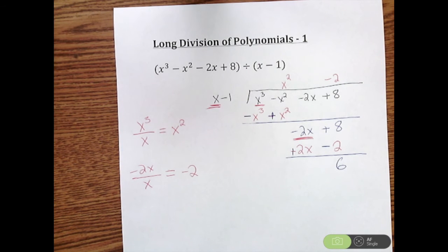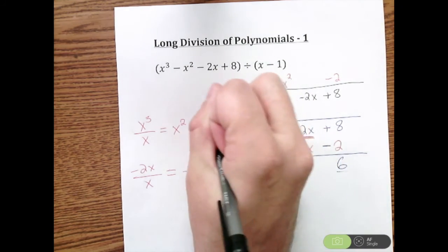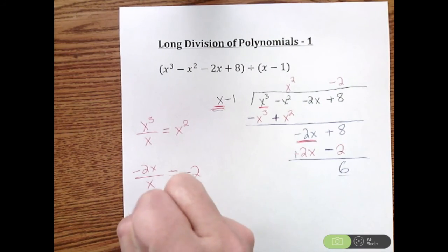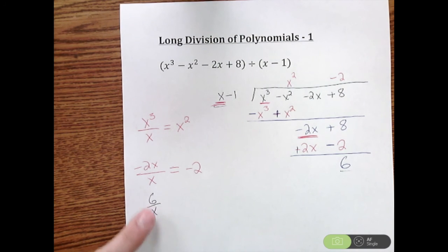Now we would want to keep trying again. So you take the first term here divided by the first term there. So you would have 6 divided by X, but looking at that, nothing simplifies there. So whenever you get something complex there, that's when you know you're done.